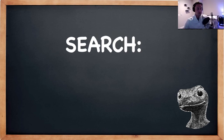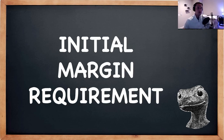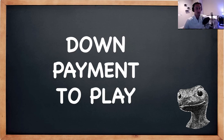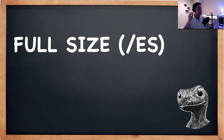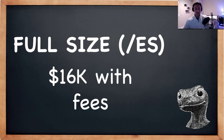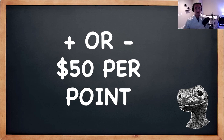The way S&P 500 futures work: if you're searching in your platform, it's going to be /ES — forward slash ES — that's essentially the ticker to pull these up. The way they work is you have an initial margin requirement, which you can picture as your down payment to play the game. It's like holding something in escrow — you're not buying a $16,000 share of stock. For full-size /ES, the margin requirement is around $16,000 per contract.